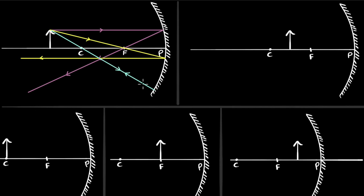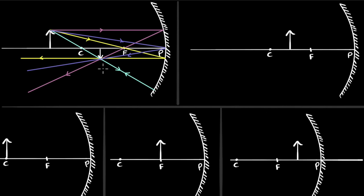So if the incident ray is along the normal, the reflected ray will always be along the normal as well — this is the law of reflection. Angle of incidence is zero, angle of reflection is also zero. The fourth ray we can draw at the pole, making sure the reflected ray has the same angle. Wherever the rays meet will be your image. Our image is over here — it is smaller than the object, inverted, which means it is real, and its position is between C and F. You don't have to draw all four rays; you can draw any two rays you want.